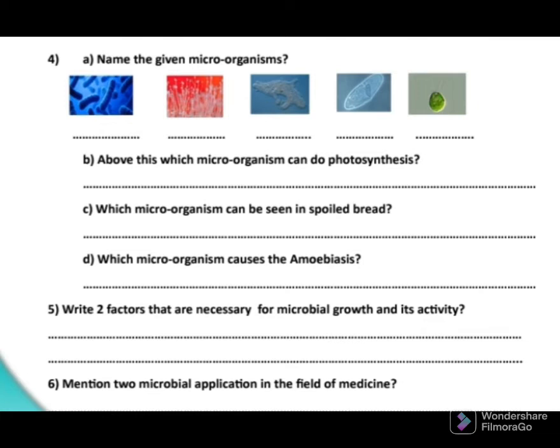Let's go to part B: which of the above microorganisms can perform photosynthesis? As I already explained, Chlamydomonas has chlorophyll, which is why Chlamydomonas can perform photosynthesis properly. Chlamydomonas is an example of algae. Spirogyra is also an example of algae, but Spirogyra cannot perform photosynthesis in the same context here. Therefore, the suitable answer for part B is Chlamydomonas.